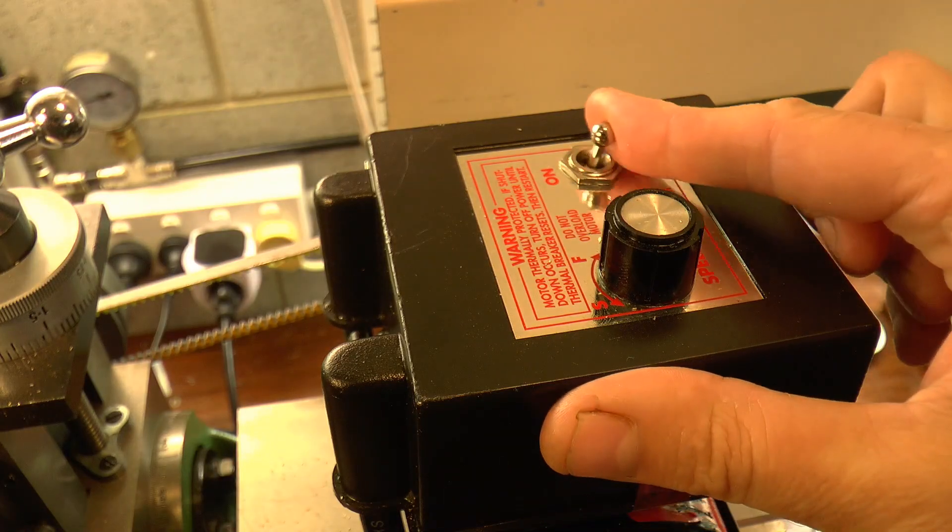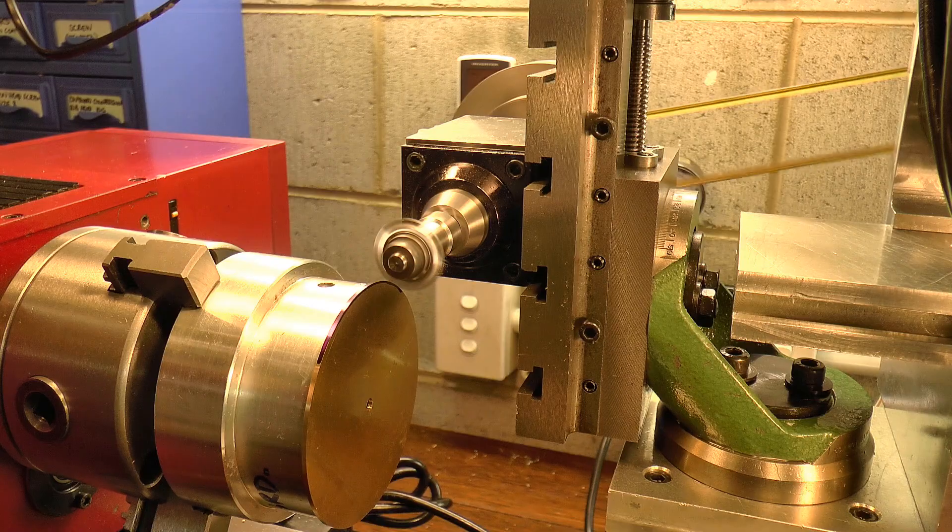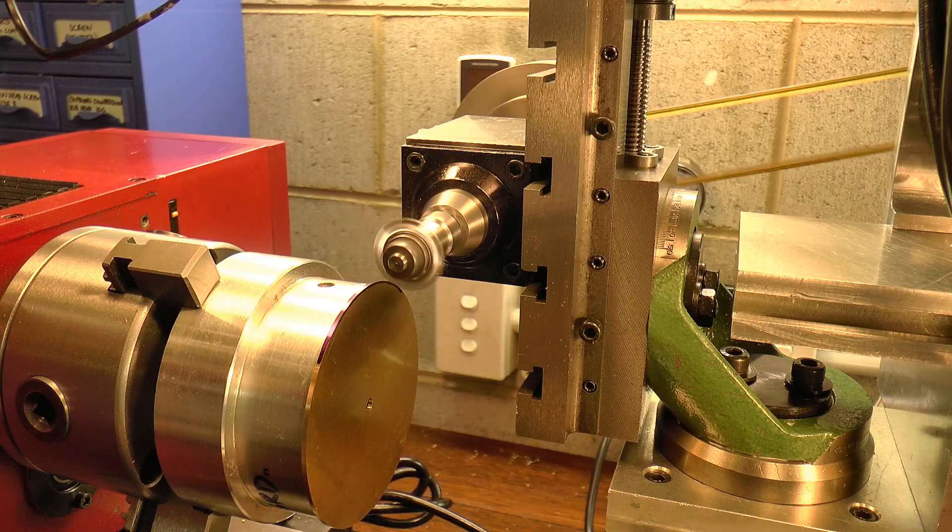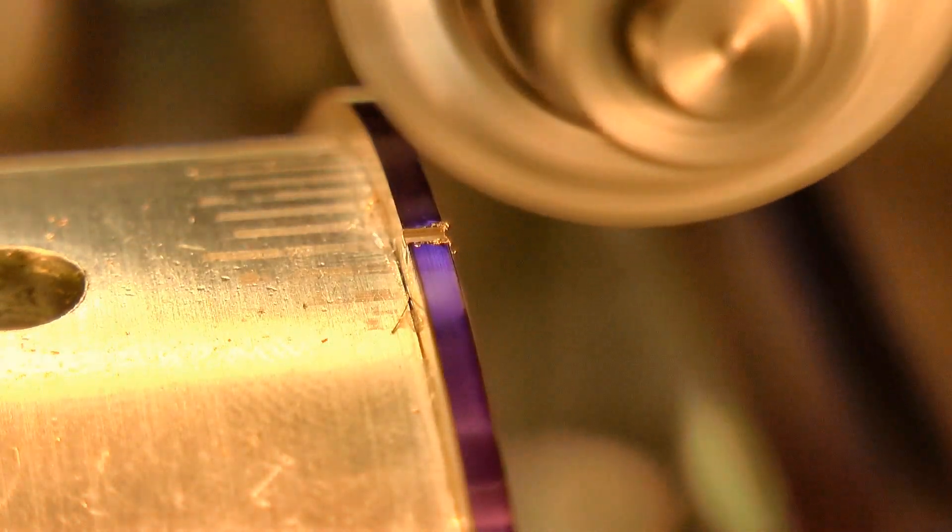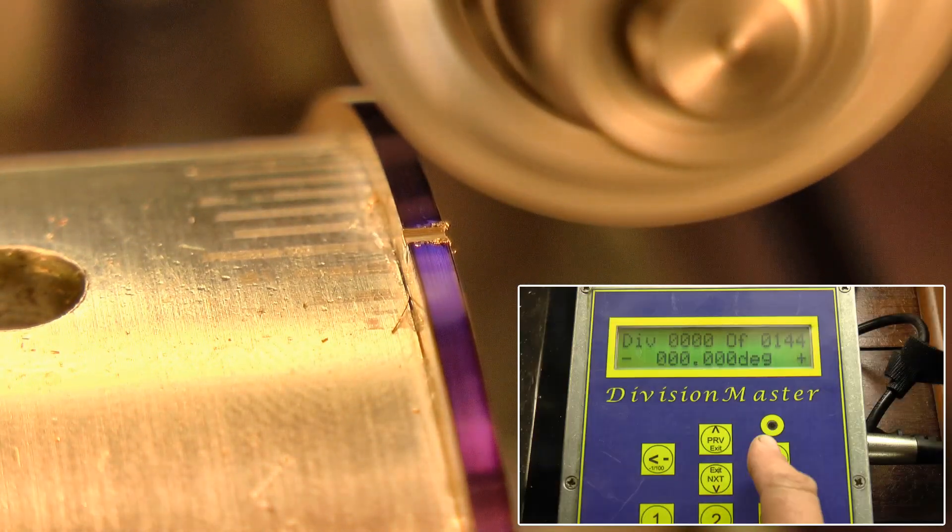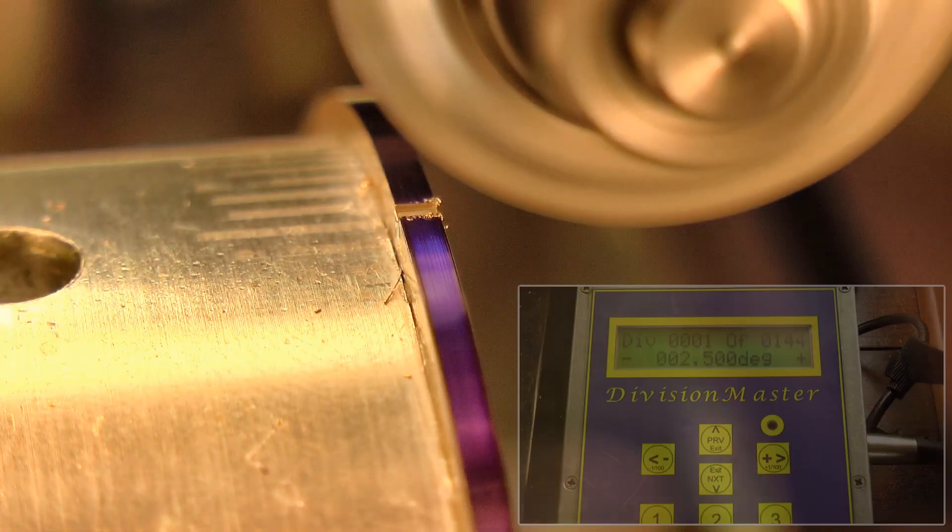Ok, now after all that setup, let's finally cut some teeth. The first step is to establish the correct depth of cut. And to do this, I took repeated cuts on either side of a single tooth, slightly lowering the cutter after each pass.